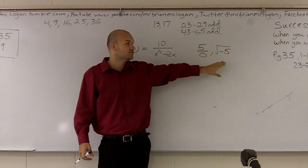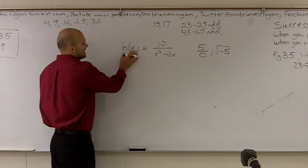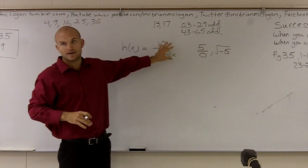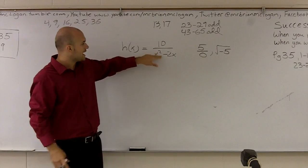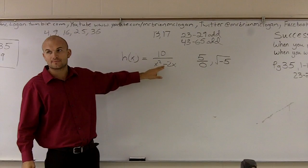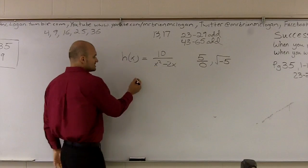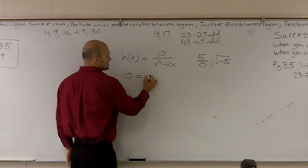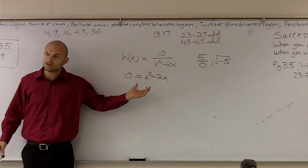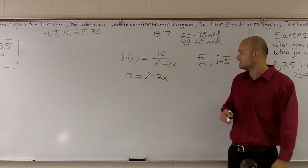Those are the only two numbers we're going to exclude from our domain. So when I look at h of x equals 10 divided by x squared minus 2x, I don't have a radical, so I'm not going to worry about that. But I know it's all real numbers except there cannot be a zero on the bottom. So I need to figure out what numbers will give us a zero on the bottom. We write an equation: zero equals x squared minus 2x. I want to figure out what value gives me zero.